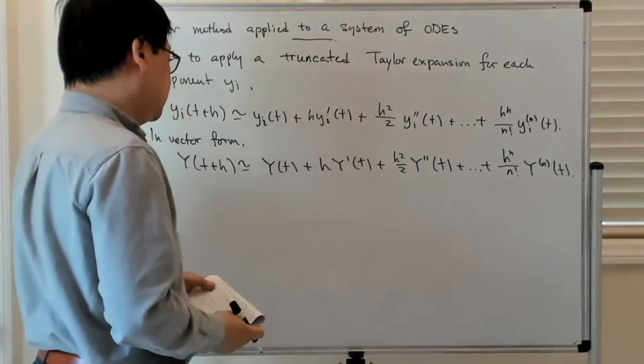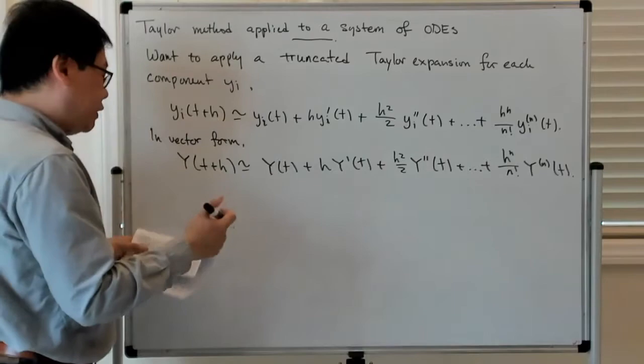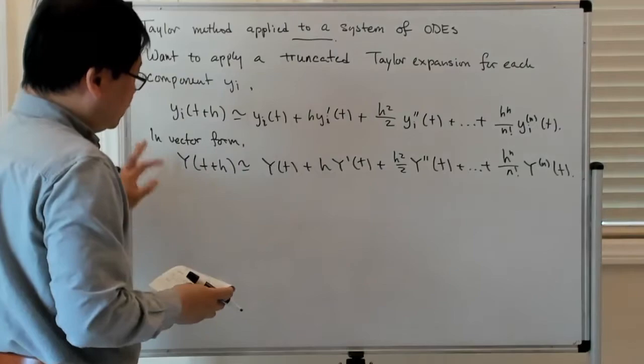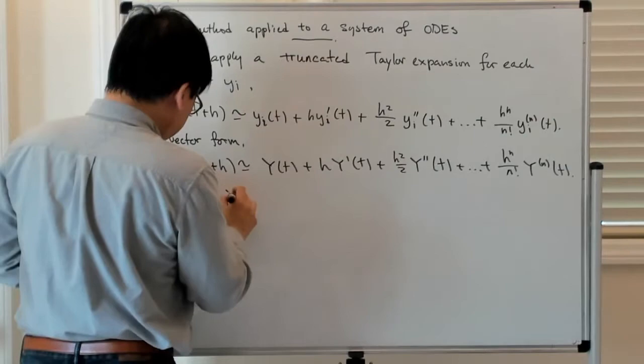As you can see, in vector form it looks very, very similar to the usual Taylor method, except that instead of little y you have big Y. Instead of y being a scalar, you now have Y being a vector. Let's look at this more explicitly with an example.